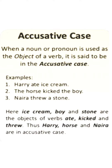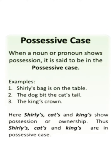Accusative case: when a noun or pronoun is used as the object of a verb, it is said to be in accusative case. Examples: Harry ate ice cream. The horse kicked the boy. Naria threw a stone. Here ice cream, boy, and stone are the objects of verbs ate, kicked, and threw. Thus ice cream, boy, and stone are in the accusative case.